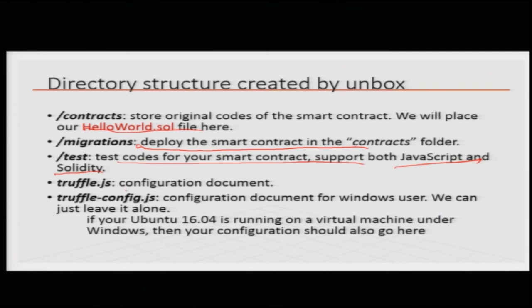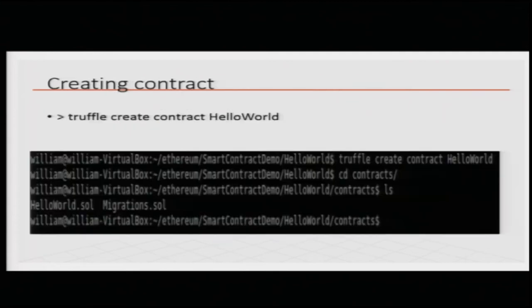You have to uncomment the network configuration in truffle-config.js, where the network host is localhost (127.0.0.1) and the port is 8545. Then you run 'truffle create contract HelloWorld', and it will create a skeleton for HelloWorld.sol. This will look something like: 'pragma solidity' — specifying the Solidity version, which right now is around 0.7 — and then the 'contract HelloWorld' block with a constructor that initializes the contract, called only when you first deploy it.